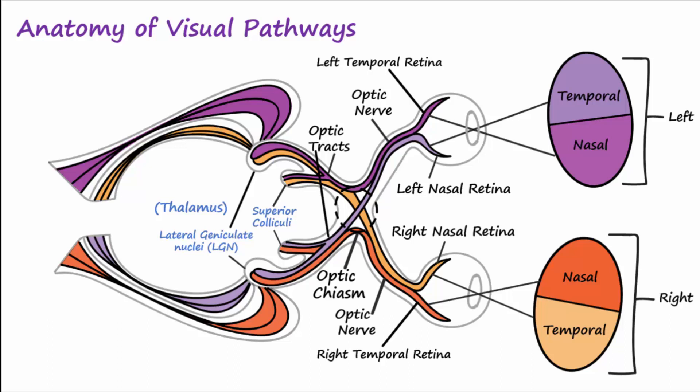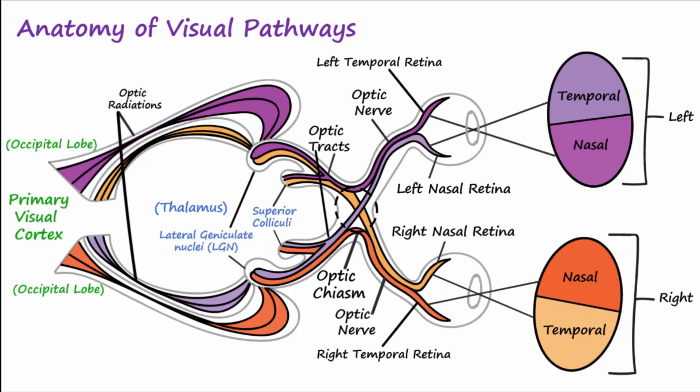The optic tract axons synapse with cell bodies of the LGN in the thalamus. Visual information then travels by way of optic radiations from the LGN to the primary visual cortex in the occipital lobe.